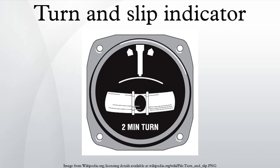The turn coordinator is a further development of the turn and slip indicator, with the major difference being the display and the axis upon which the gimbal is mounted. The display is that of a miniature airplane as seen from behind, which looks similar to an attitude indicator. No pitch information is usually shown on the instrument to avoid confusion, as pitch can be obtained from the artificial horizon instrument.